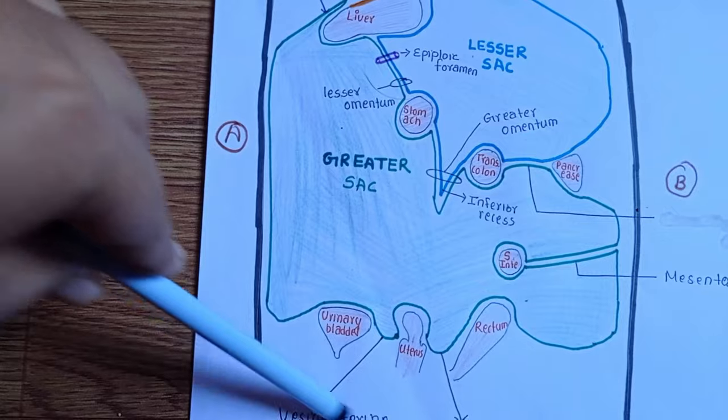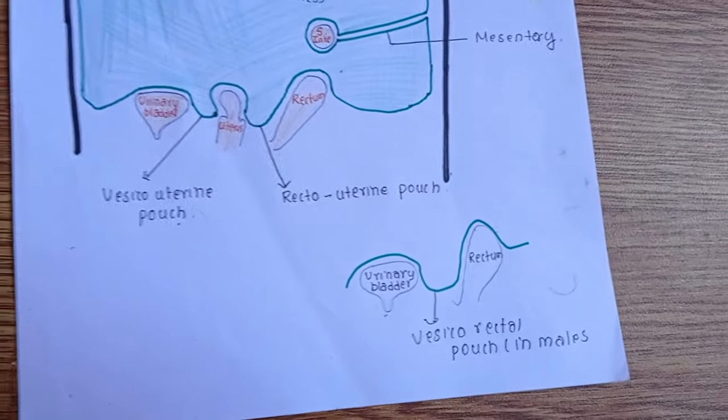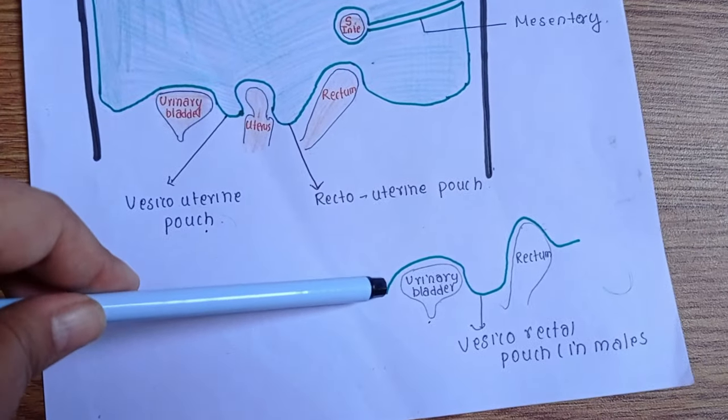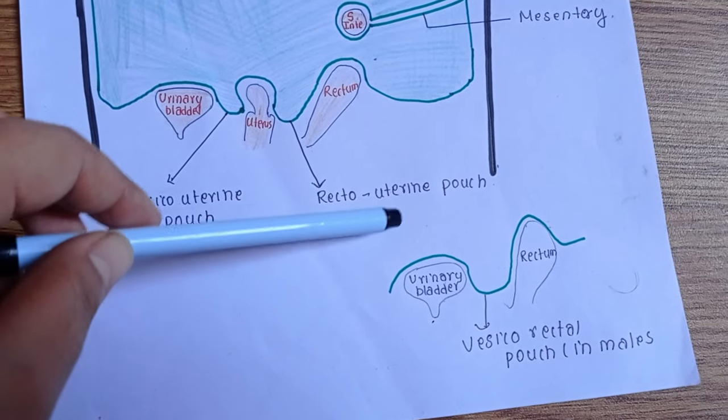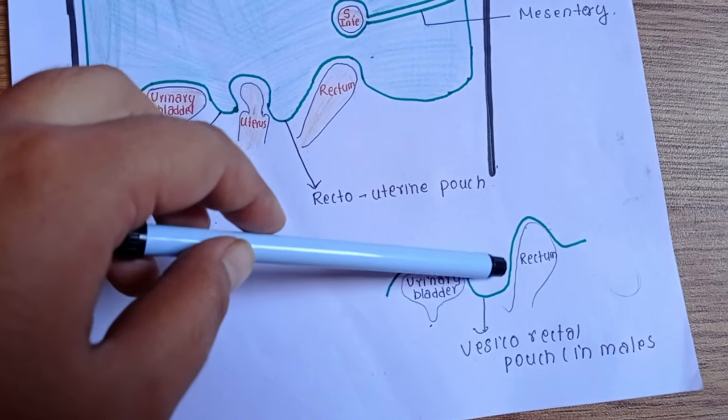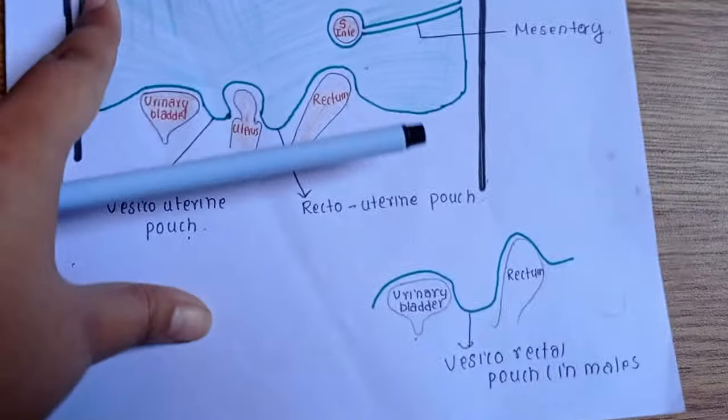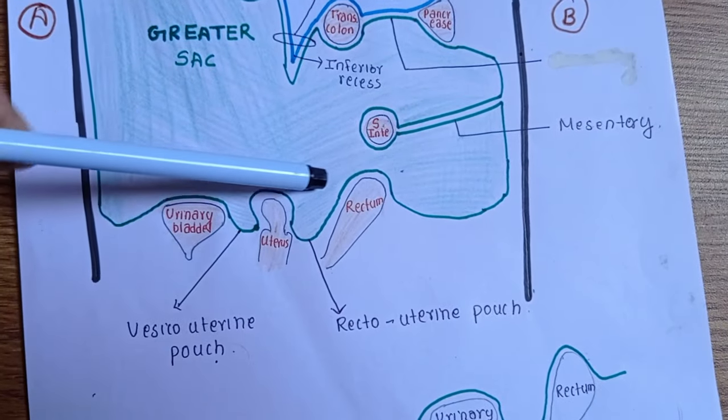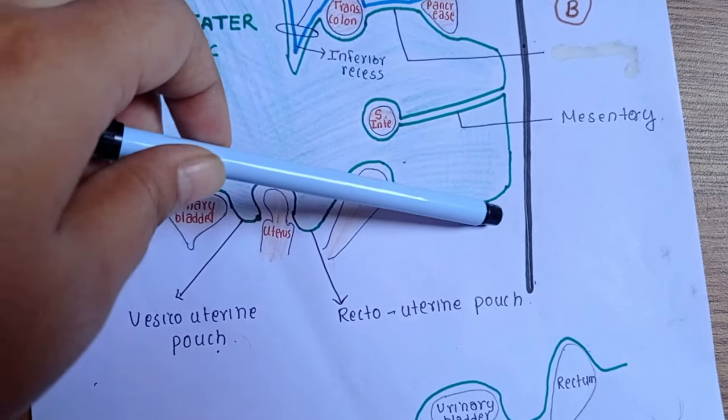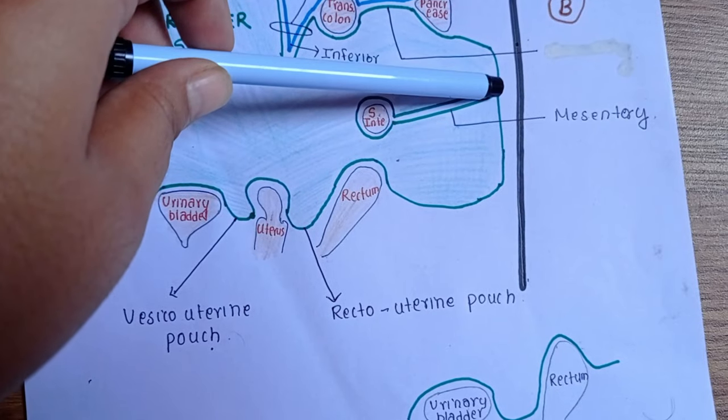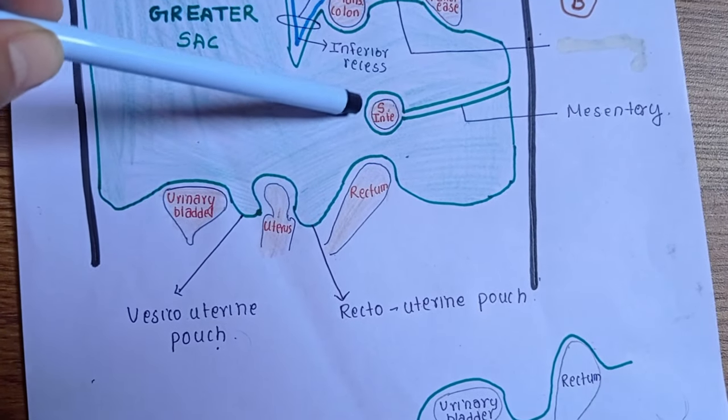This one is in female only. In males, there is urinary bladder, then the peritoneum after covering the urinary bladder goes directly to the rectum. After rectum it moves upward like this, also giving a fold to the small intestine here.